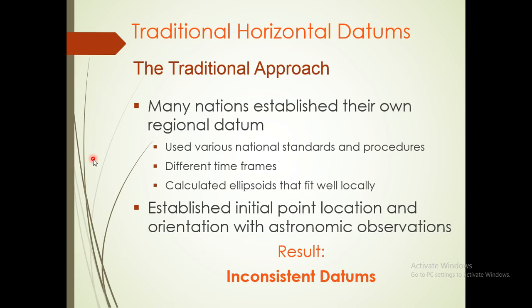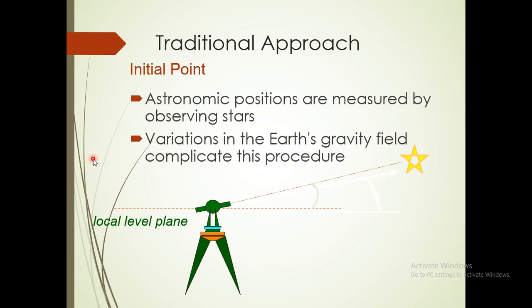Traditionally, many countries established their own local datums. As mentioned, national standards had different procedures, different time frames, and different ellipsoids that fit locally very well. This results in inconsistent data — different places use different datums. People using different devices and variation in the Earth's gravity field also contribute to this inconsistency.